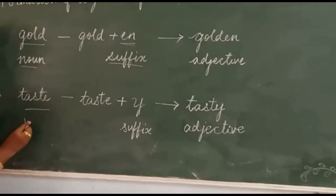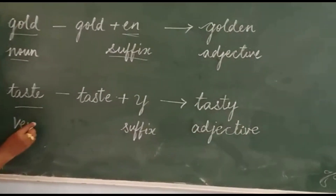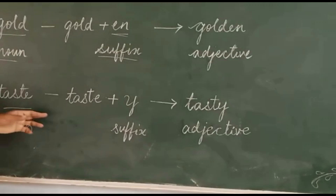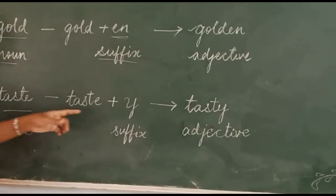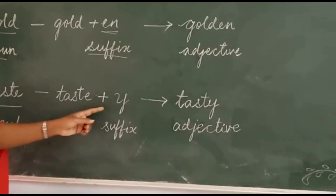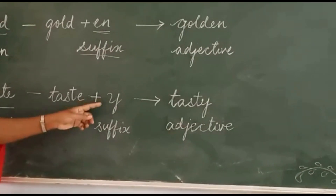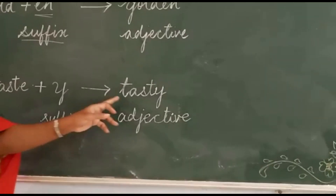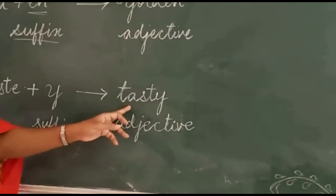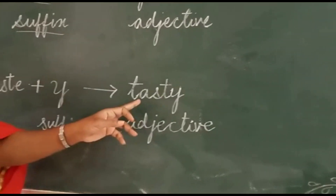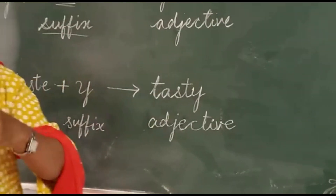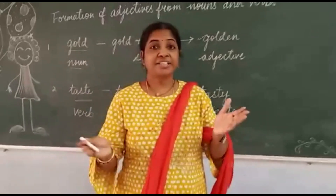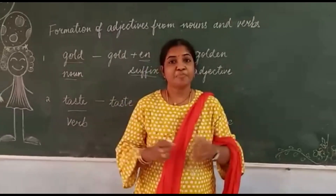The next one: 'taste' is the verb. Here, to 'taste' you are adding the suffix '-y' and it forms the adjective 'tasty'. For example: 'Today I had a tasty breakfast.'